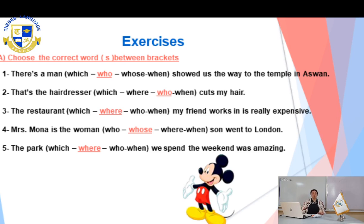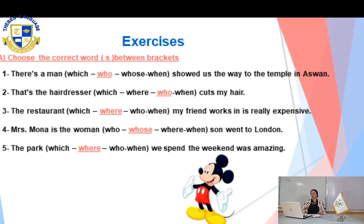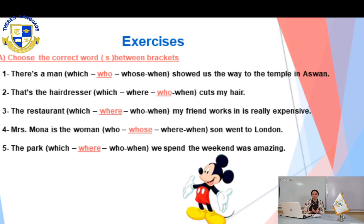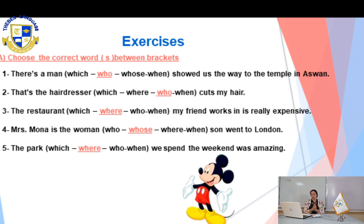Now let's move to number five. 'The park [which / where / who / when] we spent the weekend was amazing.' It's a place — I'm talking about the park. So which word? 'Where.' So: 'The park where we spent the weekend was amazing.'